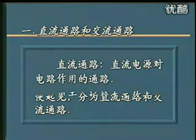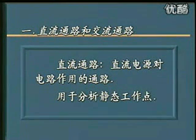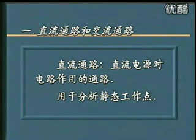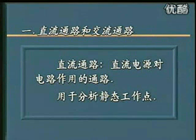那么什么是直流通路呢？直流通路指的是直流电源对电路作用的通路，也可以说是直流信号对电路作用的通路。从直流通路这样一个概念出发，我们就可以知道它只能用于分析静态工作点，它是指放大电路里面三极管那些IBQ、ICQ所走过的通路。